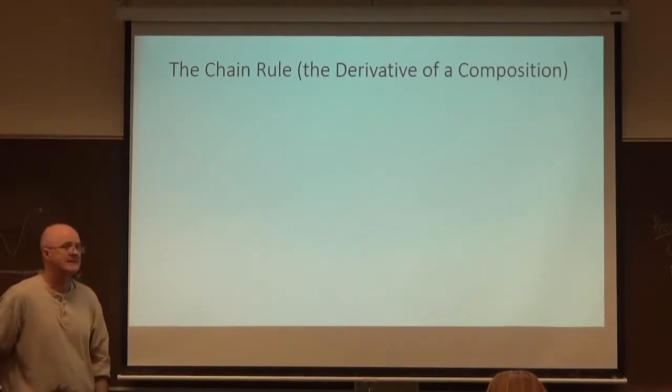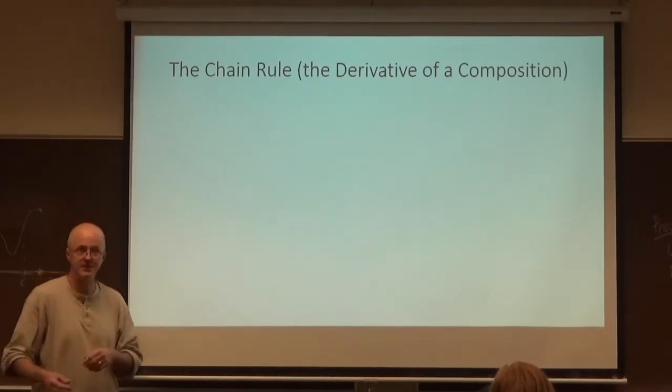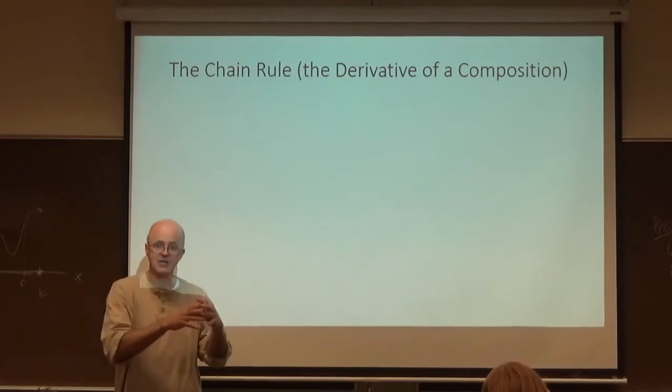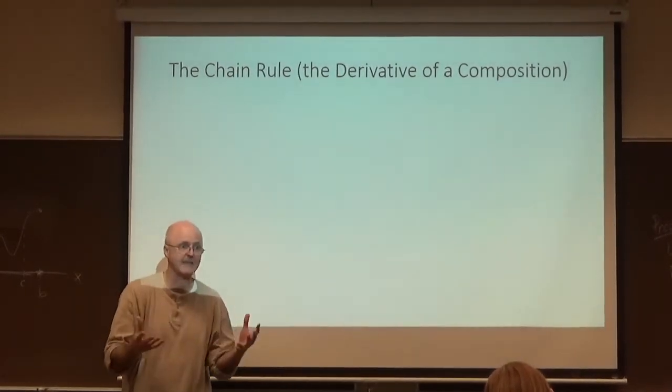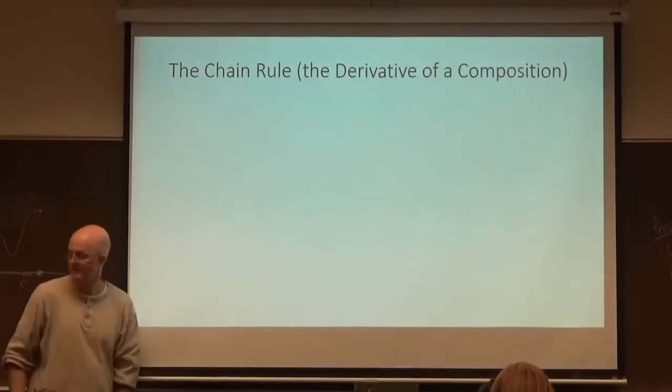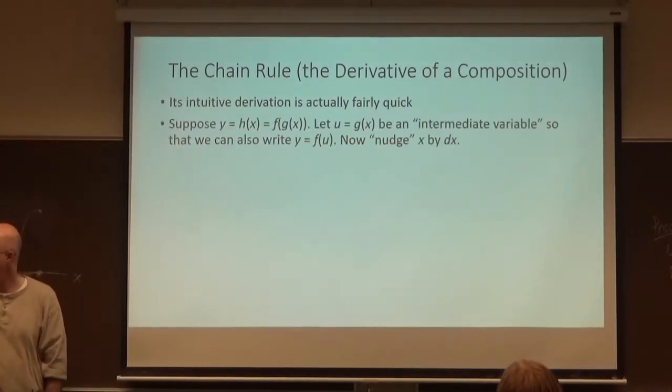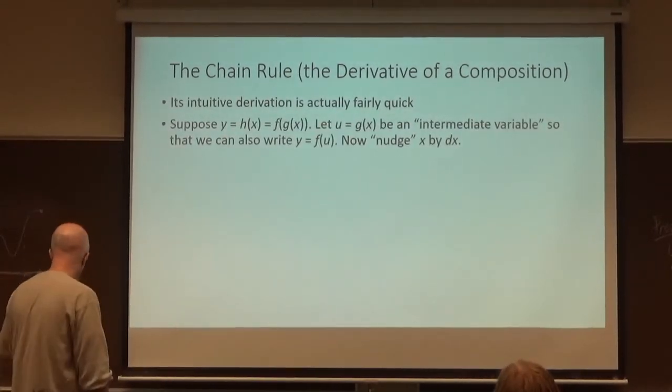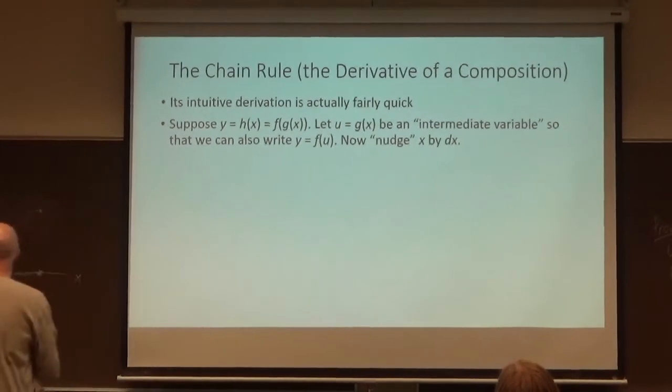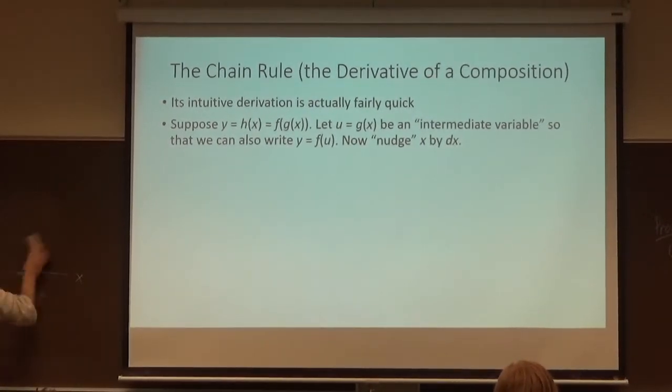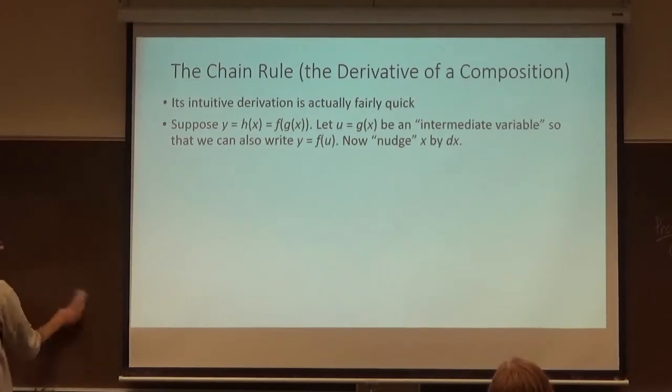What about the chain rule? Let's spend a little bit more time with its derivation today. Again, the chain rule is the derivative of a composition. f of g of x. It tells you how to take the derivative of that. Here's the derivation. It's actually fairly quick. Essentially, you do a little trick. Introducing a new variable into the situation. It's helpful to do this, at least.